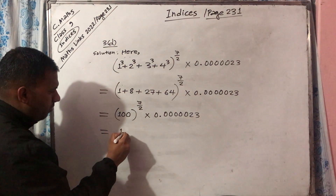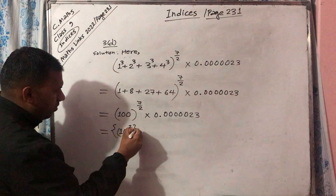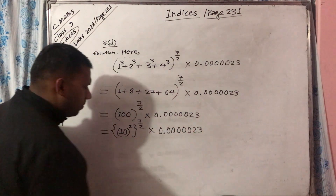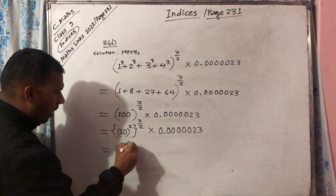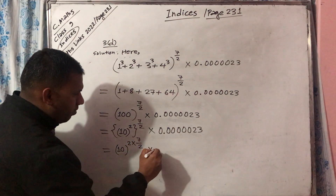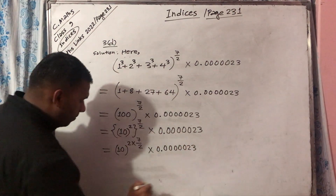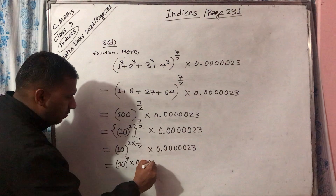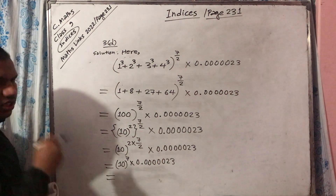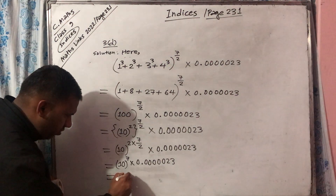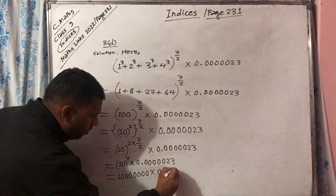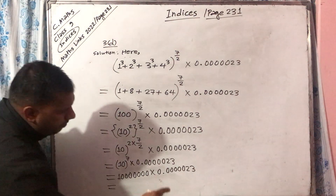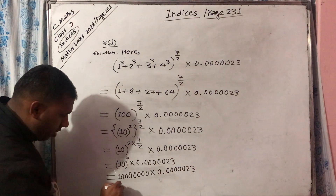Now this equals 100 is 10 square, its next power is 7 by 2, multiplied by 0.00000023. This is equal to 10 to the power of 2 times 7 by 2, times 0.00000023. The 2s cancel each other, so 10 to the power of 7, times 0.00000023. Now 10 to the power of 7 is 1 and 7 zeros. This was shifted 7 steps towards the right: 1, 2, 3, 4, 5, 6, 7. So the answer is 23.